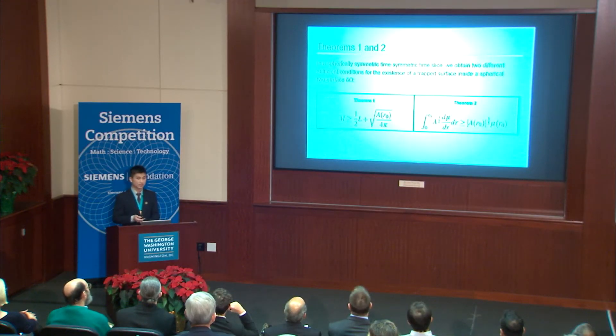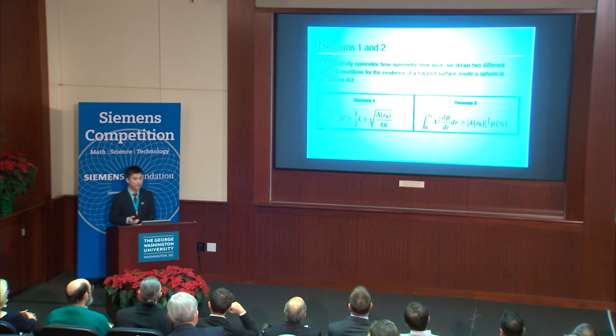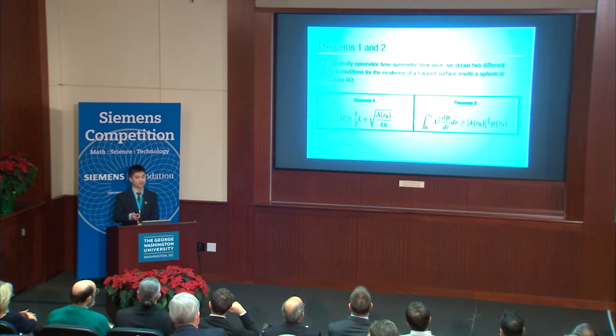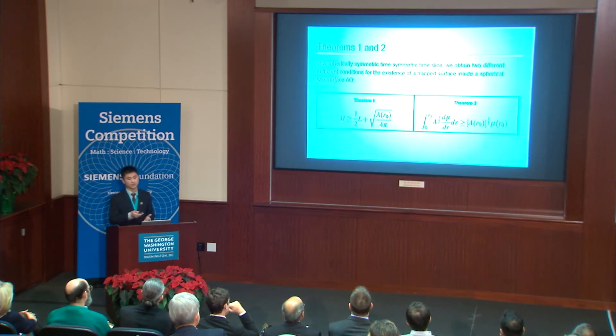To help address this problem, I found two other sufficient conditions for the existence of a trapped surface in a spherically symmetric, time-symmetric time-slice. My first theorem states that a spherical boundary in such a time-slice is trapped if its enclosed mass content is greater than or equal to half of the proper radius plus the square root of the proper area of the boundary over 4π. My second theorem states that a spherical boundary is trapped if the integral of proper area to the 3/2 power times the derivative of energy density with respect to the coordinate radius over the enclosed volume is greater than or equal to the proper area to the 3/2 power times the point-wise energy density at the boundary.